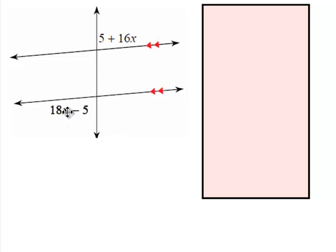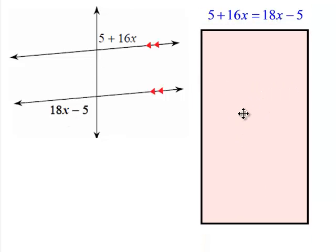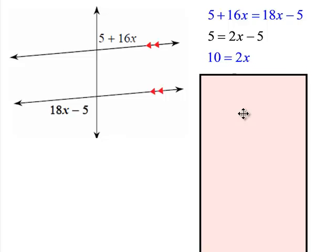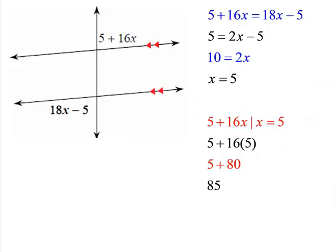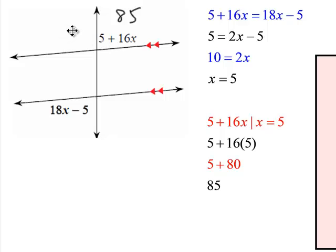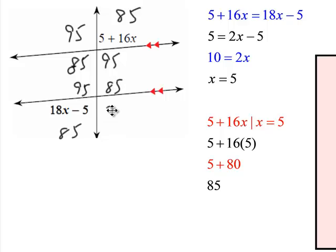Once again, alternate exterior angles — you can set them equal to each other and do the math. We get x equals 5. Substitute 5 into one of these expressions and you find out this angle is 85. If that's 85, then this has to be 95. This is 85, this is 95, this is 95, and this is 85.